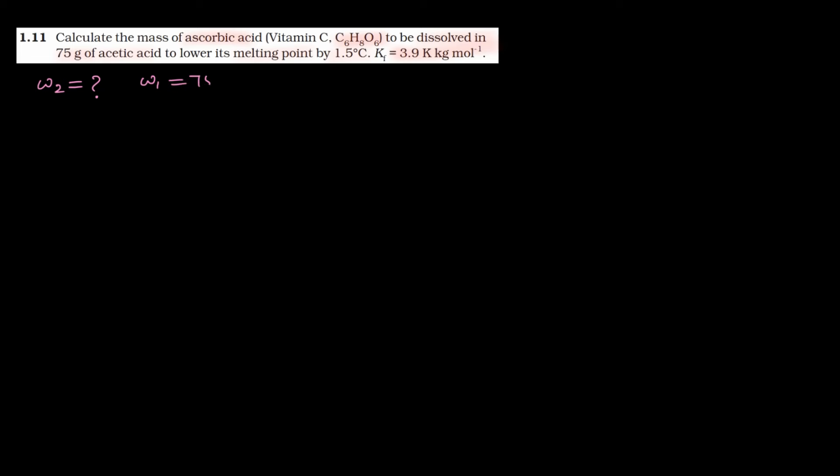यहाँ पर क्या करना है? आपको calculate करना है mass of ascorbic acid, मतलब आपको W2 यहाँ पर calculate करना है। W1 कितना given है? 75 grams — यह है mass of solvent। इसको W1 भी लिख सकते हैं, WA भी लिख सकते हैं।